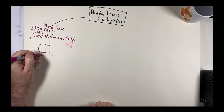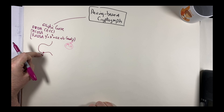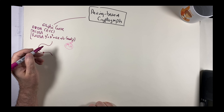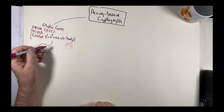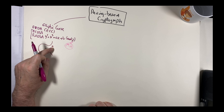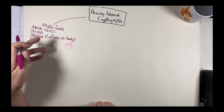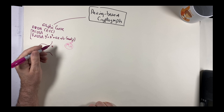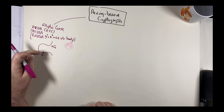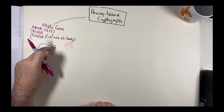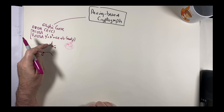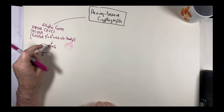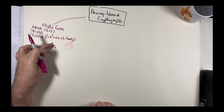We define a base point G on the curve as an (X, Y) point. We then define our secret key X, which is a 256-bit random value — this becomes our private key. We then add G to itself X times and find another point on the curve, which becomes our public key.